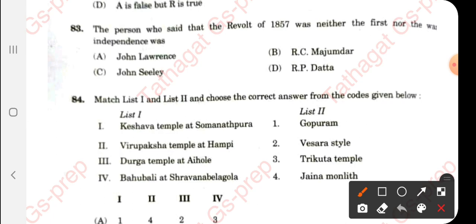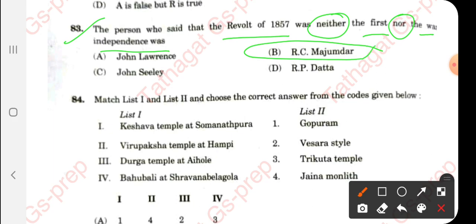This video is also available in Kannada on our Tathaga JSP Kannada channel; you can find the link in the description box. Question 83: The person who said the revolt of 1857 was 'neither the first nor the last war of independence' — it was R.C. Majumdar. This is a repeated question.